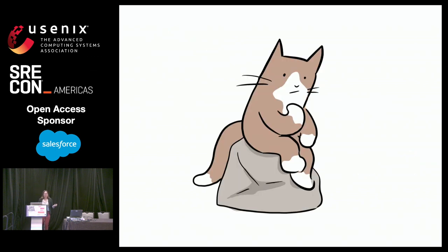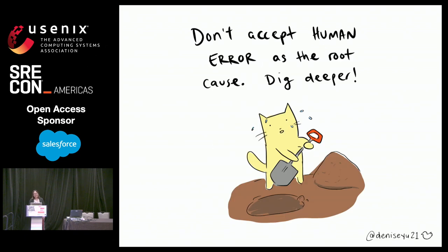I was only kind of half-joking about epistemology earlier, but in all seriousness, we all have different frames of reference, and humans don't have great vocabulary to figure out what it is that we don't agree on. Initially I wanted to say: don't accept human error as the root cause. But now I'm questioning whether root causes even exist. Maybe not.